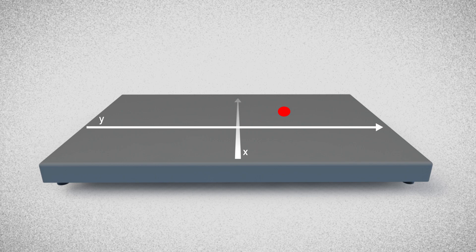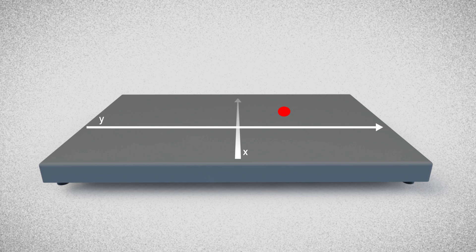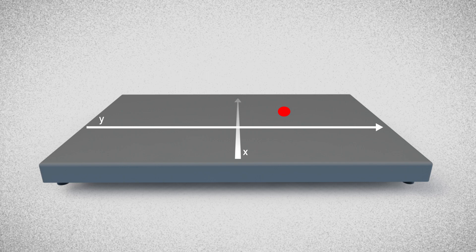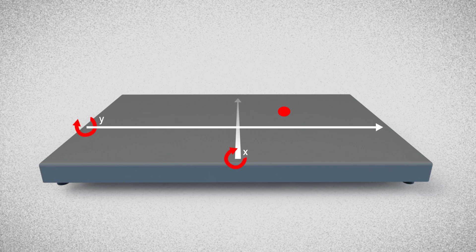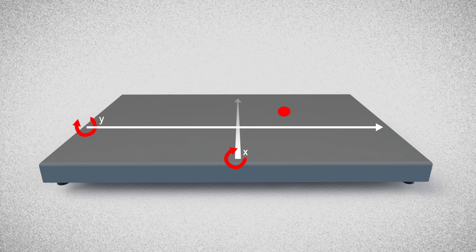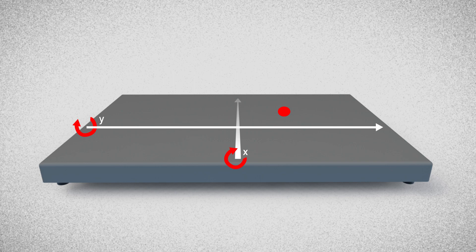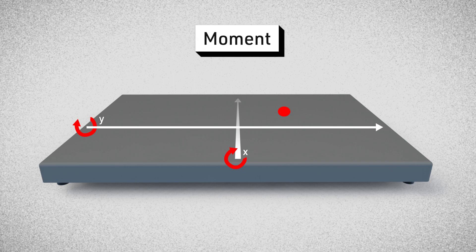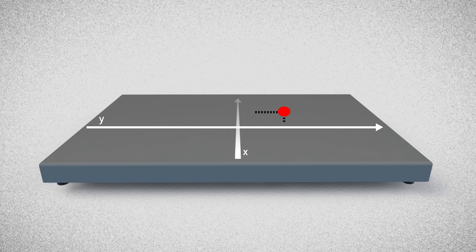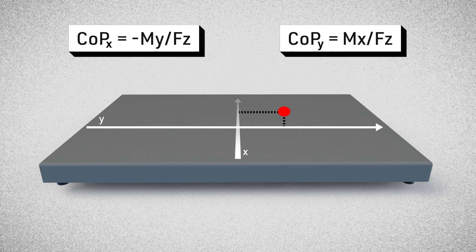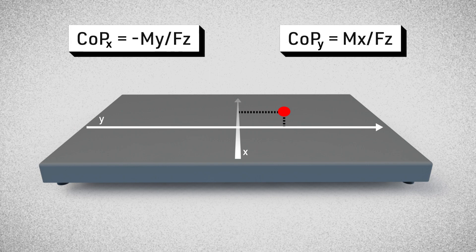The offset of the ground reaction force from the center of the force plate is measured by how much the plate is twisting around the X and Y axes. Each twist is also referred to as a moment. In turn, dividing these moments by the vertical force gives the location of the center of pressure.